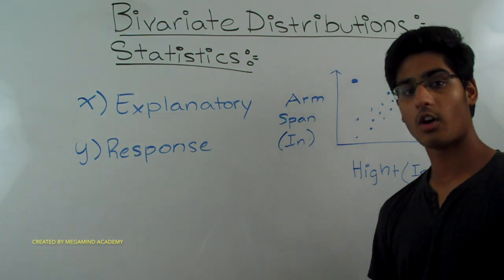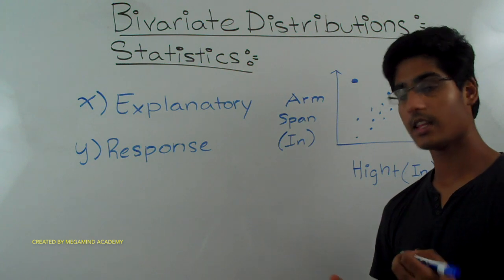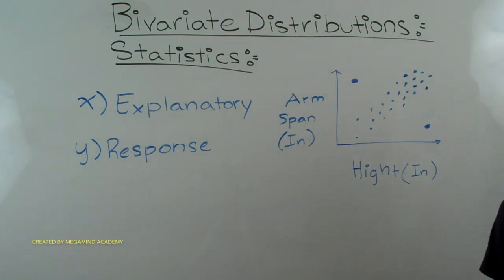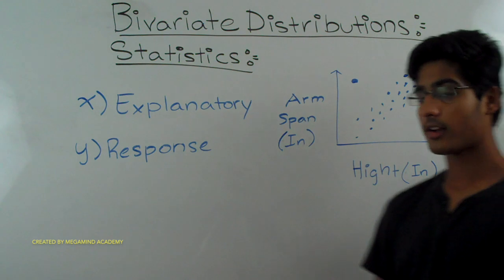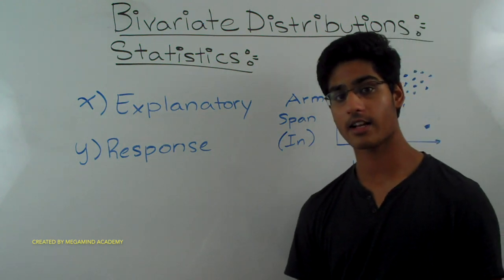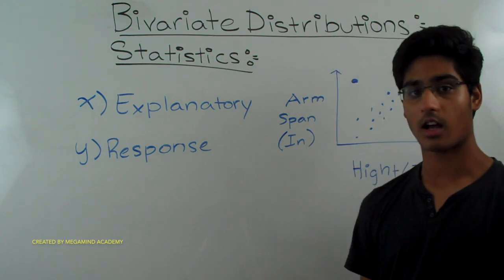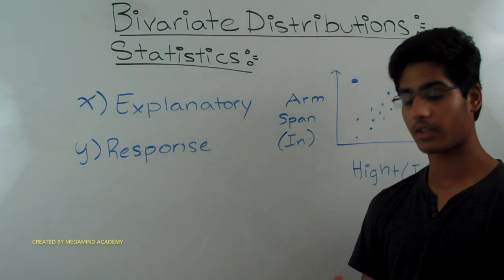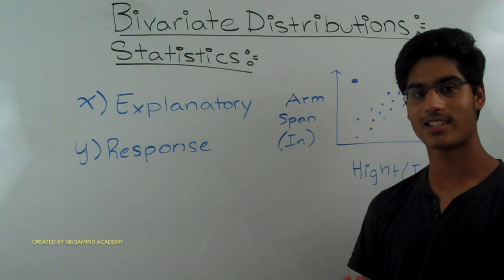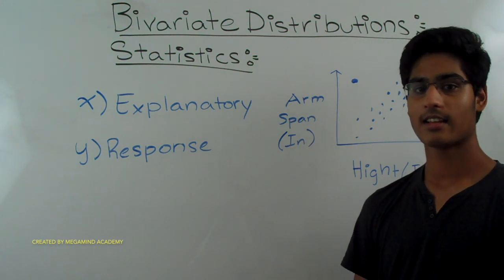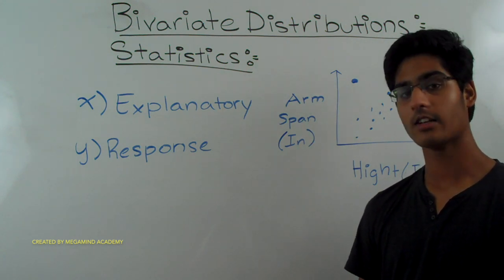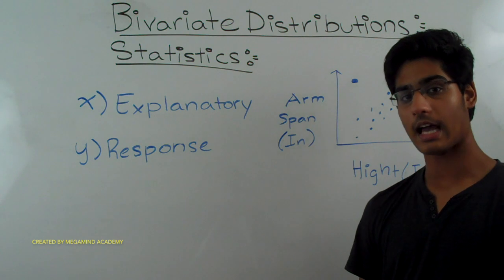Now we have to go over what to think about when describing bivariate distributions. When describing univariate distributions, we talk about the shape, the spread, the center, the best measure of center, and the outliers. So what do we have to talk about when describing bivariate distributions?